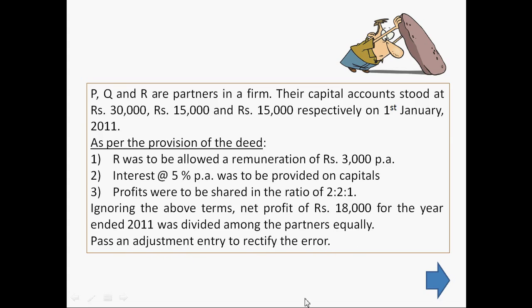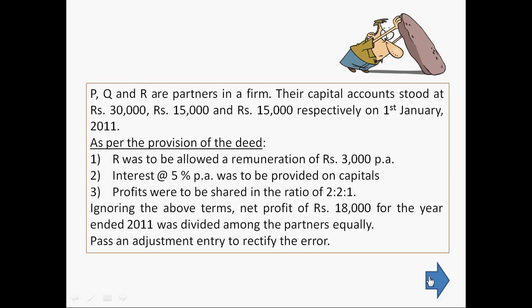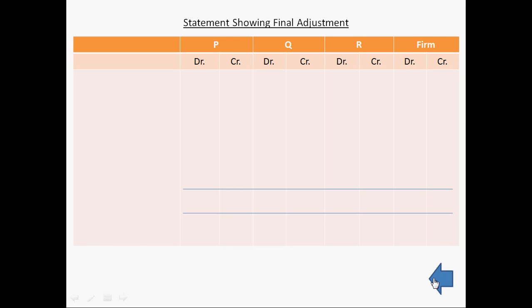So this is the problem. In this problem we have seen that profits of Rs 18,000 was divided equally among the partners without providing these provisions of the partnership deed. Now, how we will rectify this mistake?